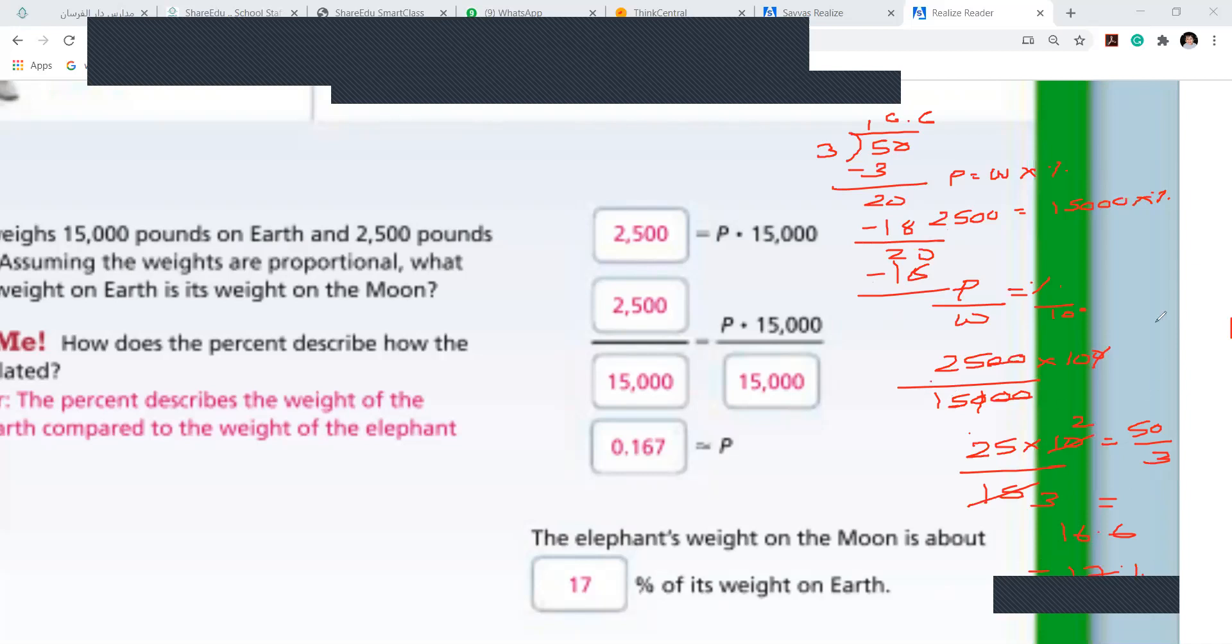Now what you do is you follow this procedure, girls. This procedure is the best procedure: part by whole equals percent by hundred. They ask you to find percentage, right? So part means 2,500 divided by 15,000, and this hundred goes there, becomes multiplication. So I get something like 16.7, that is nothing but 17 percent. Fill up these boxes as they said and follow this procedure.